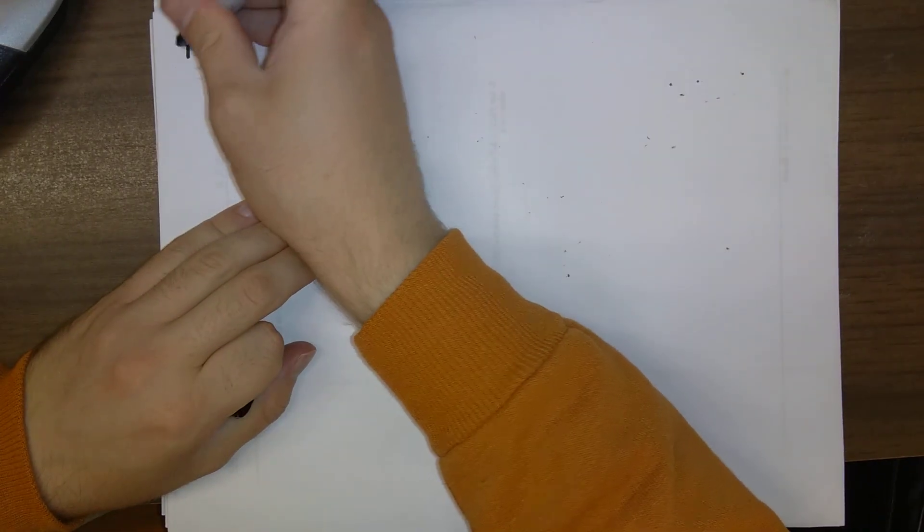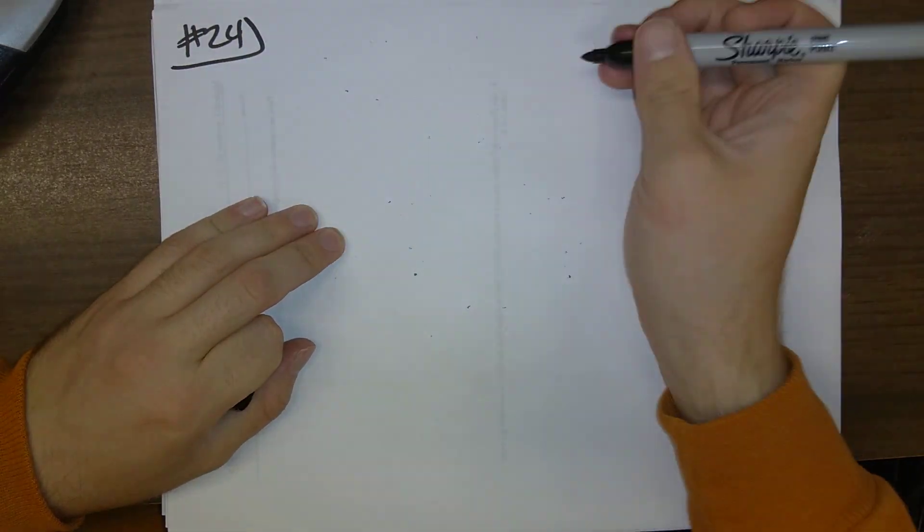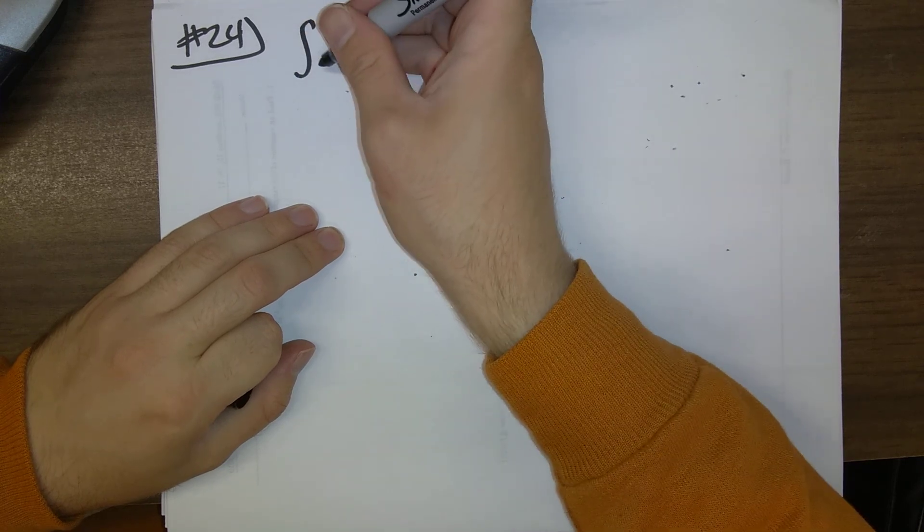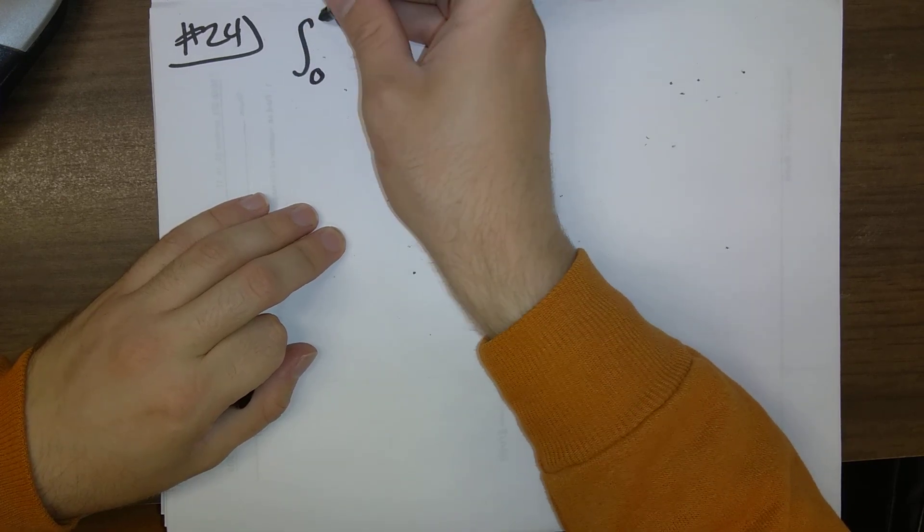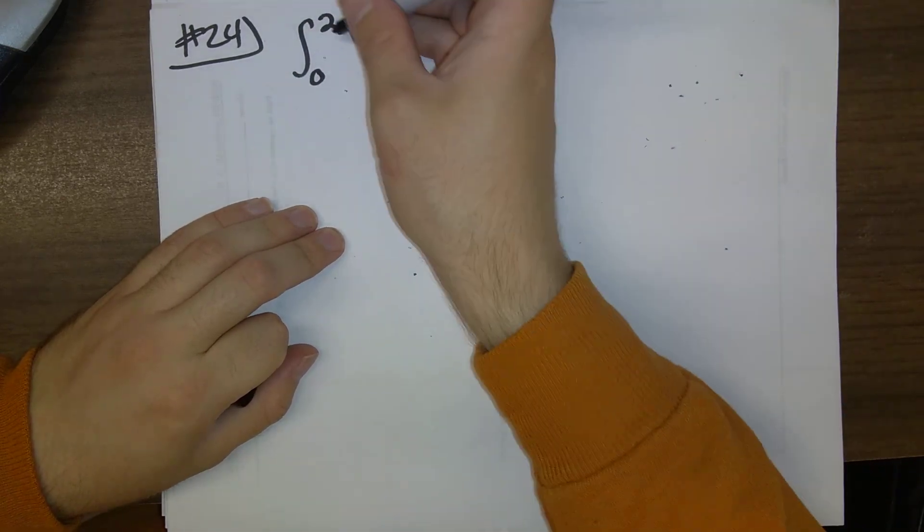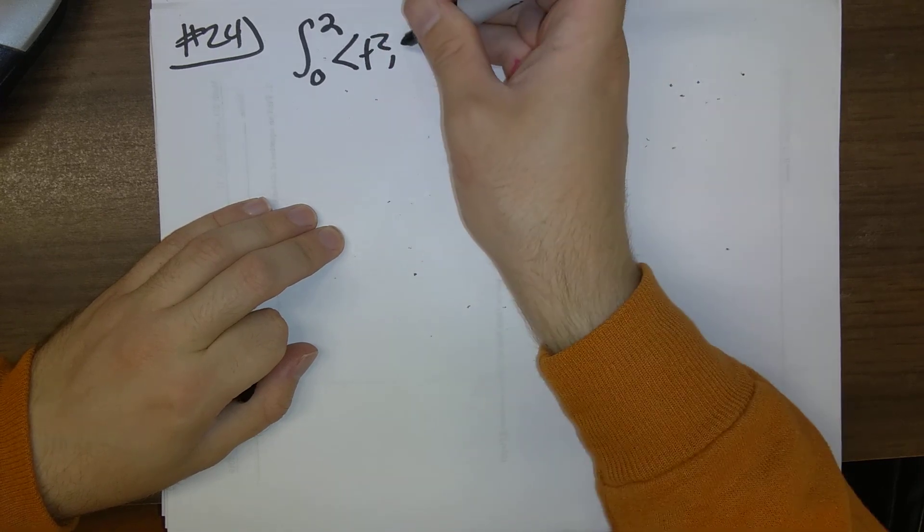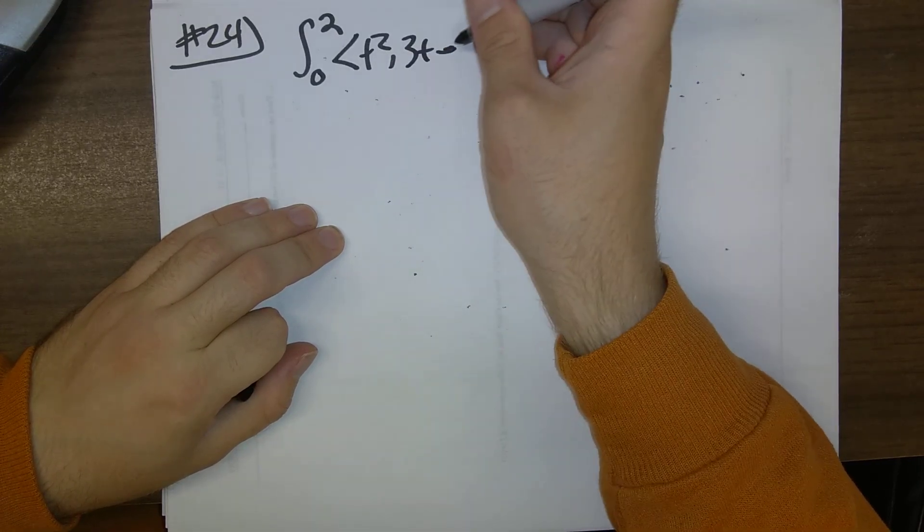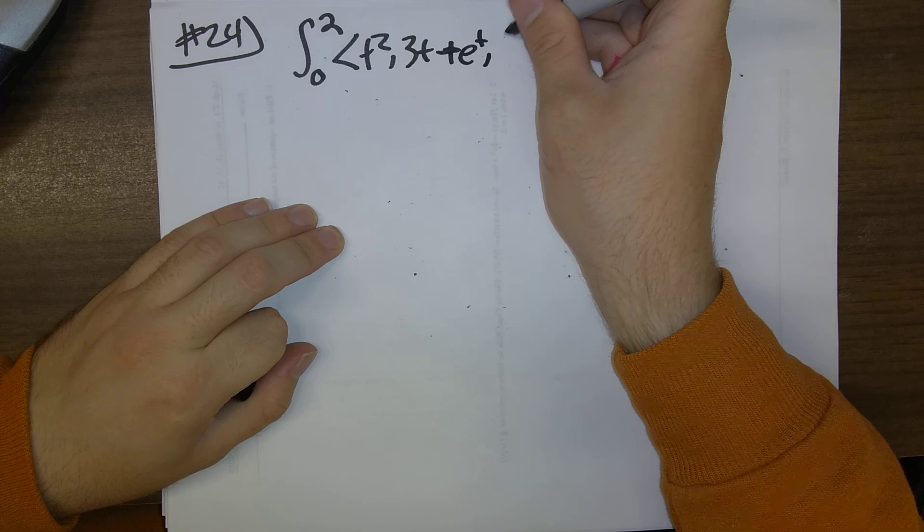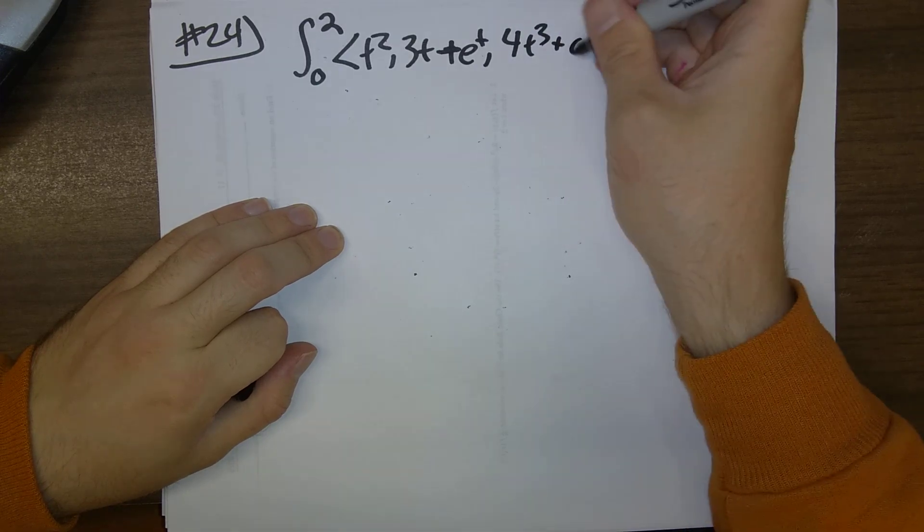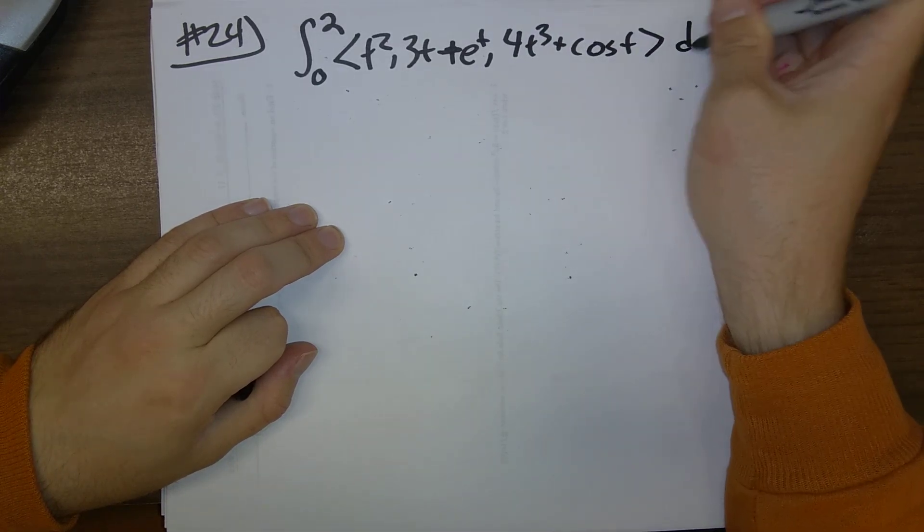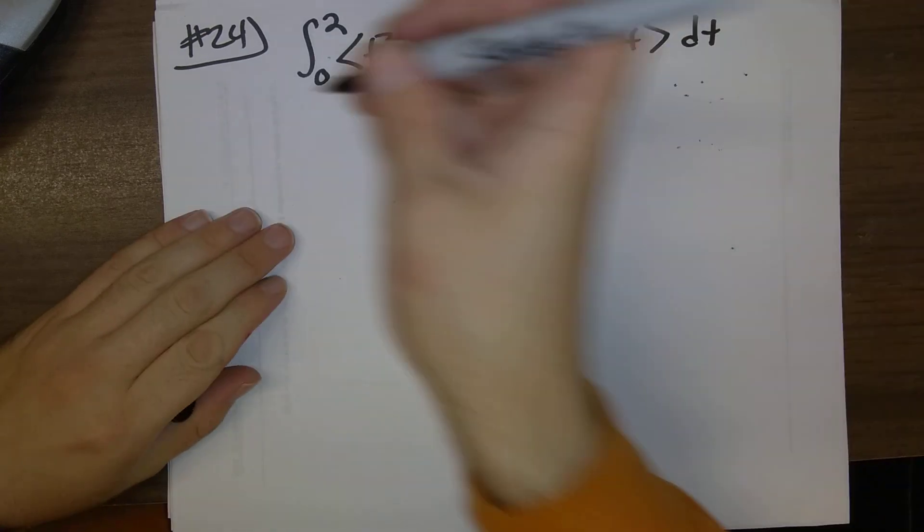With problem number 24, which is an integral question, it asks us to calculate, to evaluate, the integral from 0 to 2 of t squared, 3t plus e to the t, and 4t cubed plus cosine t, all of that dt.